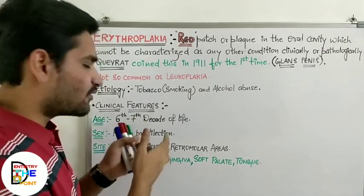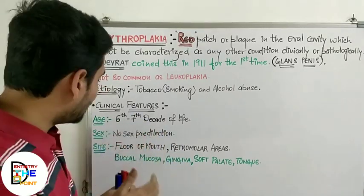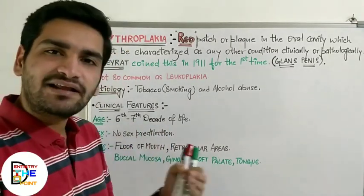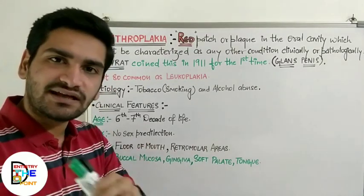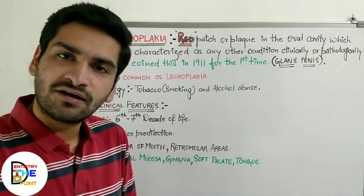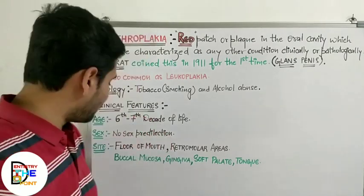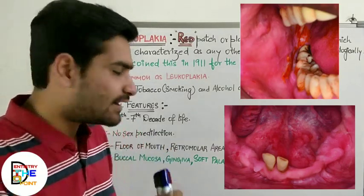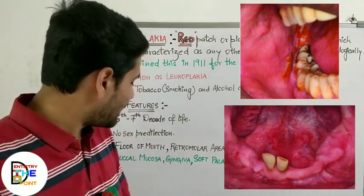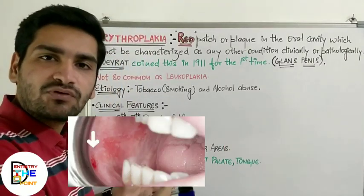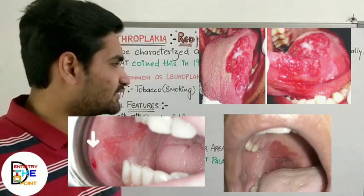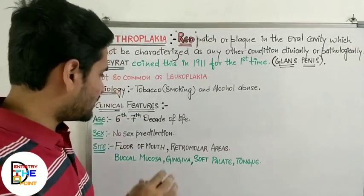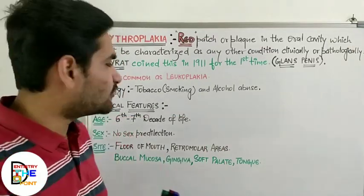Moving on to clinical features: the most common age is the sixth and seventh decade of life, meaning elderly persons are more commonly affected. There is no sex predilection — both males and females are equally affected. The most common sites are the floor of the mouth and retromolar areas. It can also occur on buccal mucosa, gingiva, soft palate, and tongue.